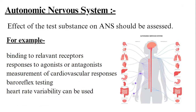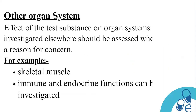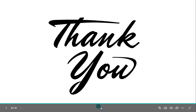For the autonomic nervous system, the effect of the test substance on ANS should be assessed, for example binding to relevant receptors, response to agonists or antagonists, measurement of cardiovascular responses, baroreflex testing, heart rate, and variability. For other organ systems, effects on systems not investigated elsewhere should be assessed where there is reason for concern; for example, skeletal muscles, immune, and endocrine function can be investigated.